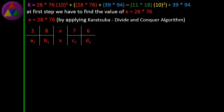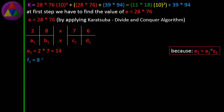28 × 76 is divided into 4 individual cells and labeled as A1, B1 and C1, D1. E1 = 2 × 7 = 14, because E1 = A1 × C1. F1 = 8 × 6 = 48, because F1 = B1 × D1.